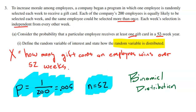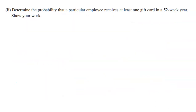Part two of question A is to actually determine the probability that an employee receives at least one gift card. It's important to understand that 'at least one' means greater than or equal to one — we're not looking for exactly one, but one or more, all the way up to possibly winning 52. That's a lot of work, so we'll use a smarter approach.